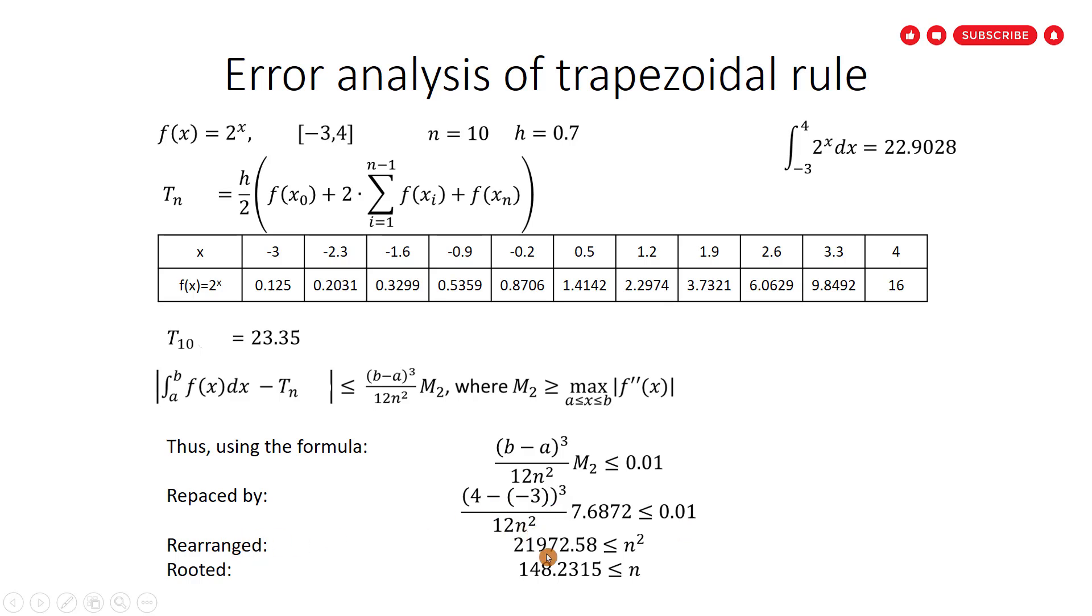Simplify more. It equals 21,972.58 smaller than or equal to n^2. Then square root both sides, we get n equal to or greater than 148.235. Thus, an error of less than 0.01 requires at least 149 subintervals. Before we start using the trapezoidal rule, we know that we have to divide the original interval into 149 subintervals to get a result with less than 0.01 error.